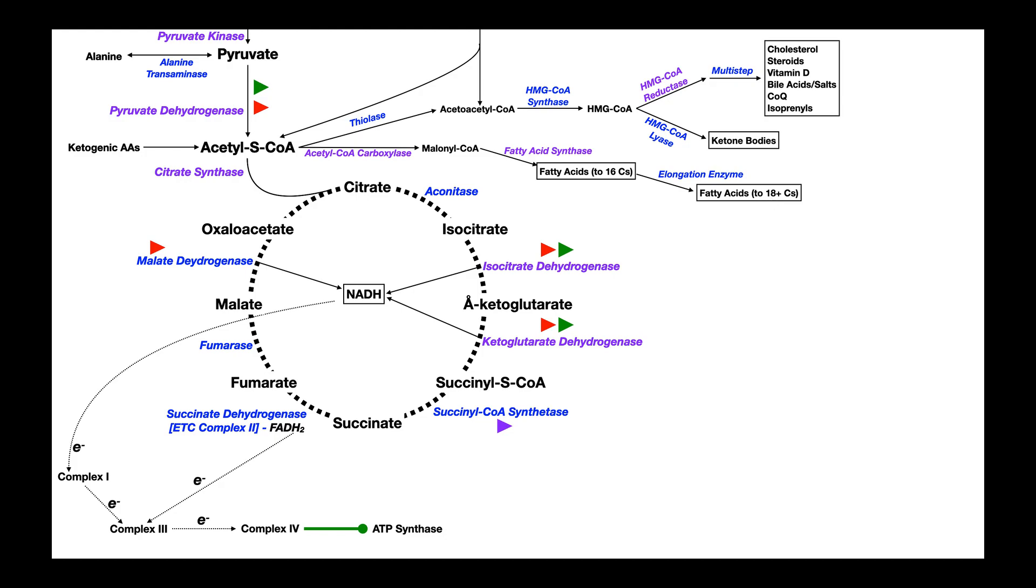Now what about some of our anaplerotic reactions of the citric acid cycle? Well, the first we'll look at is succinyl-CoA. Succinyl-CoA can be siphoned off of the citric acid cycle, especially when we have a surplus of these intermediates, and it can be consumed by this enzyme, also allosteric, called delta-aminolevulinic acid synthase, which is called ALA synthase, and it forms ALA or delta-aminolevulinic acid.